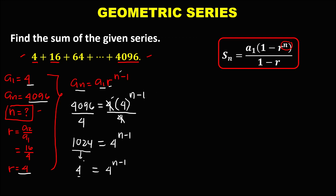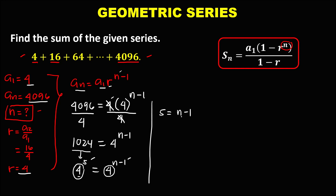So this is equal to 4 to the power 5. To solve for n, since we have now the same base, just equate the exponents. So we have 5 equals n minus 1. Then to solve for n, transpose the negative 1: 5 plus 1 equals n. Therefore n, the number of terms, is equal to 6.